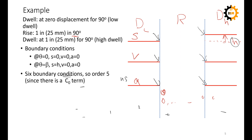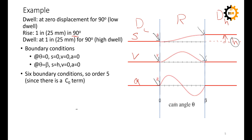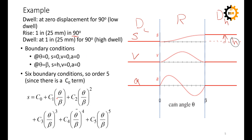We have a 5th-order polynomial with 6 terms. Plotting this polynomial in terms of θ/β, the resulting displacement, velocity, and acceleration curves follow the boundary conditions and also satisfy the fundamental cam law — acceleration is zero at the dwell transitions. Taking the first derivative gives velocity (c₀ vanishes), and the second derivative gives acceleration (c₁ also vanishes).